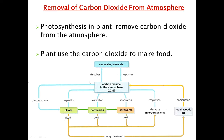Photosynthesis in plants is the only useful way by which carbon dioxide is removed from the atmosphere. When we breathe, we take in some carbon dioxide, but it is of no use to the human body. Following the line leading towards plants, photosynthesis is the process by which plants remove carbon dioxide from the atmosphere and use it to make their own food.